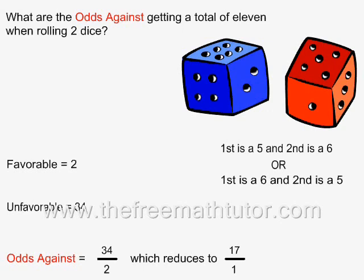There are two different ways of getting a total of 11, and we can illustrate this if we use different colored dice. The blue die can roll a 6, and the red die can roll a 5, and this gives us a total of 11.